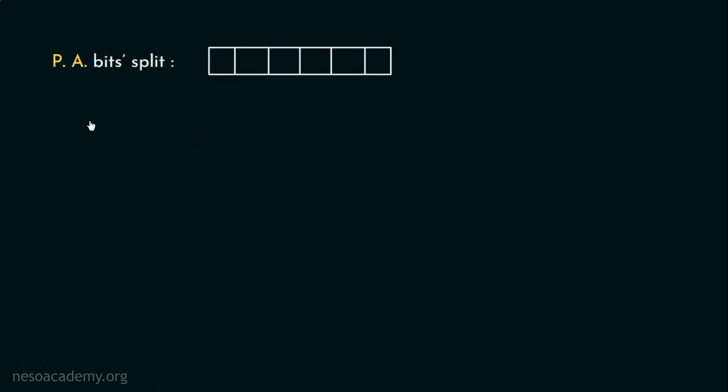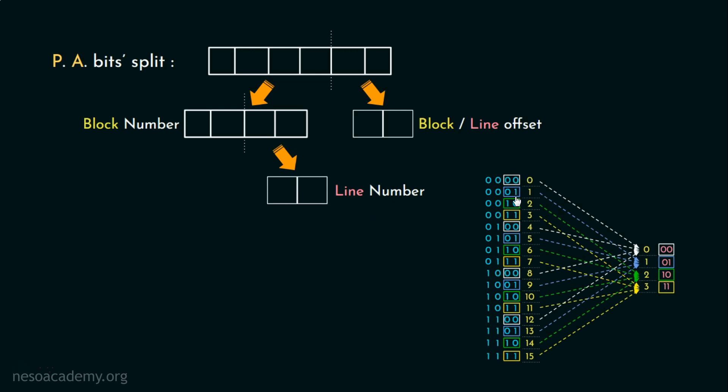So finally, the PA bits are split like this. The least significant two bits are called block or line offset. They determine each word inside either block or line. Now the rest are called block numbers. From the block numbers, the last two bits are known as line number because they actually dictate which cache line that particular block will be mapping onto. So, the remaining bits are known as tag bits.